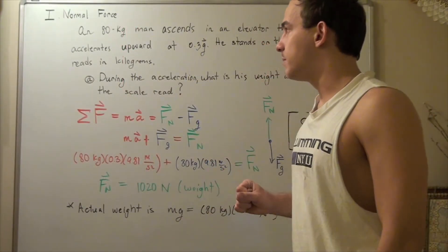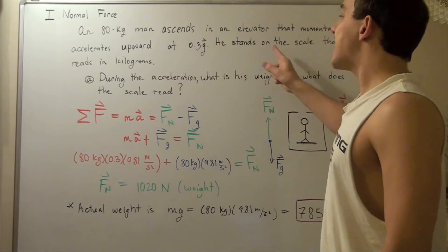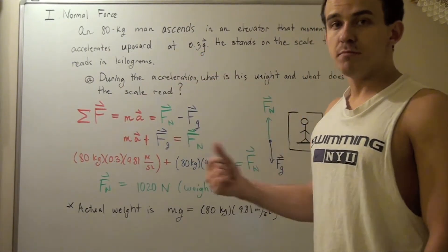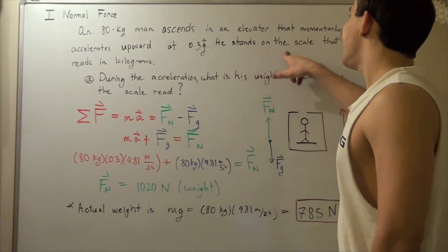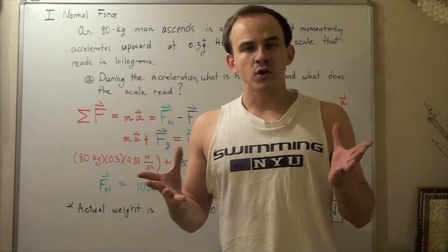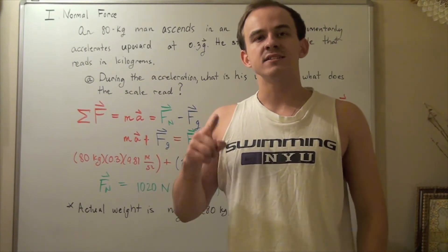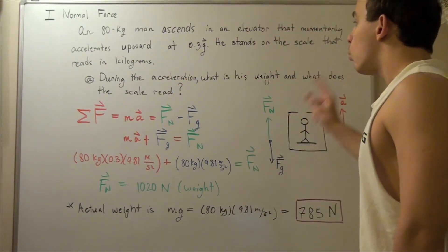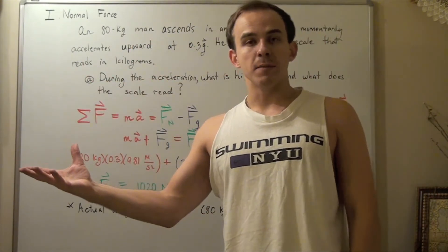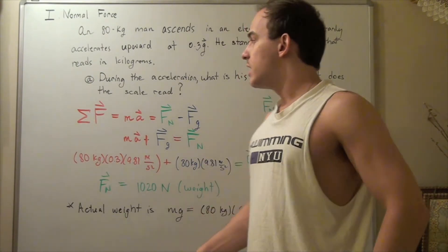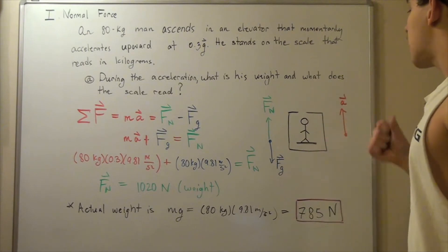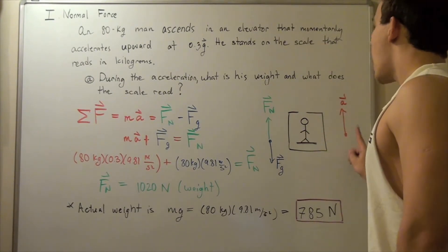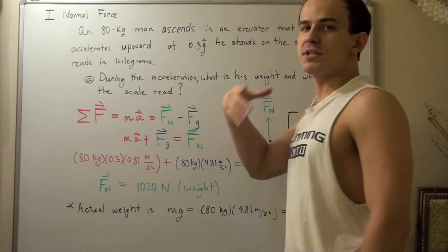Now let's examine the following example. An 80-kilogram man ascends in an elevator that momentarily accelerates upward at an acceleration of 0.3 times g, the gravitational constant 9.81 meters per second squared. The man stands on a scale that reads in kilograms. We want to find during the acceleration what is his actual weight and what does the scale read — that is, his actual weight and his apparent weight according to the scale.